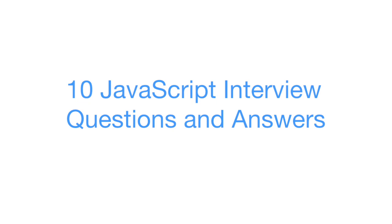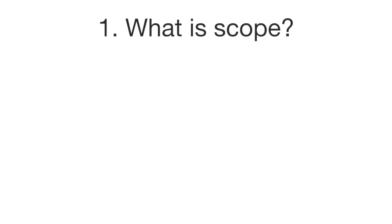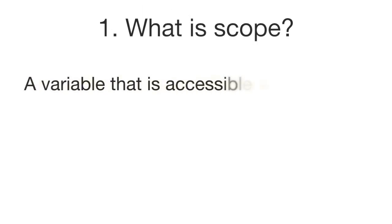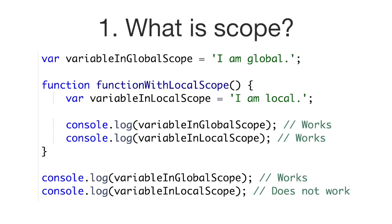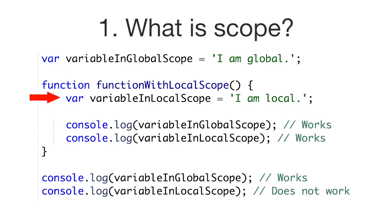Question number one: what is scope? A variable that is accessible everywhere has global scope, and a variable that can only be accessed in a particular place has local scope. We have a variable called 'variable in global scope' and it is accessible both inside and outside the function. Inside the function there is a variable called 'variable in local scope' and it is accessible inside the function but not outside of it.